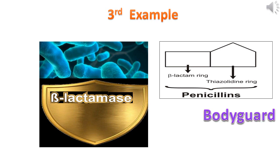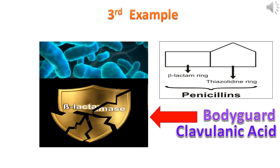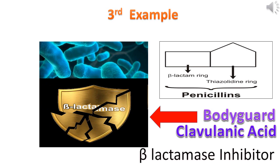An example of a bodyguard is clavulanic acid. The bodyguard inhibits the beta-lactamase enzyme, so the mode of action of clavulanic acid is as a beta-lactamase inhibitor. Now, with resistant bacteria and penicillin antibiotic both present, the beta-lactam ring in penicillin destroys the resistant bacteria.